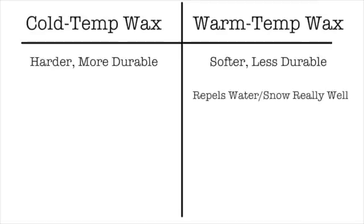But warm temp waxes also repel water better, so when you're on that kind of snow that's really soft and sticky and good for snowballs, it keeps the base from collecting all that slush and getting bogged down. A hard, cold temp wax will tend to grab slush a little more.